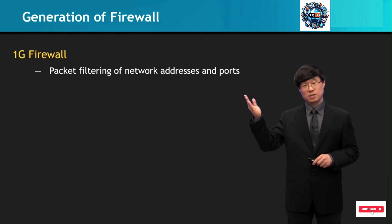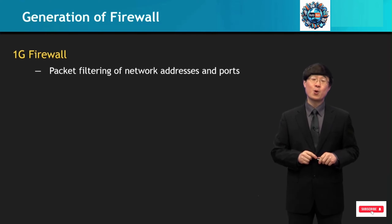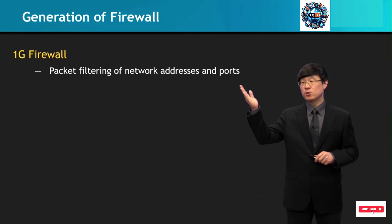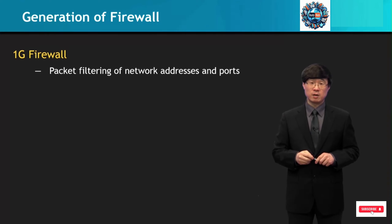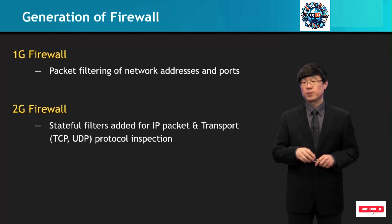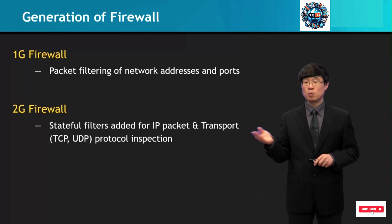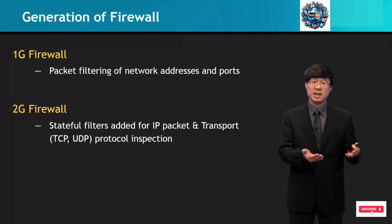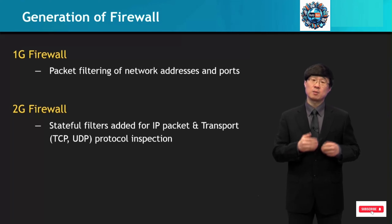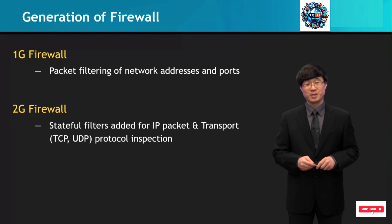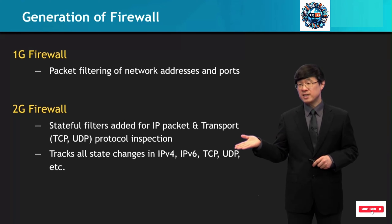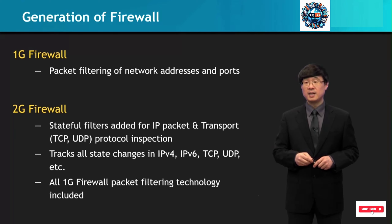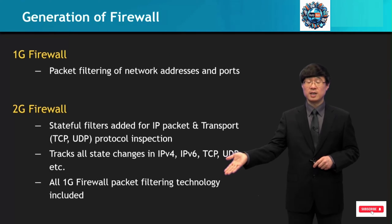These are the generations — the evolution of firewalls. It starts off with the first generation, where packet filtering of network addresses and ports are done. In the second generation, stateful filters were added for IP packet and transport protocol inspection — covering IPv4, IPv6, and transport protocols such as TCP, UDP, RTP, and others. This tracks all state changes in these protocols, and all first generation filtering techniques are included.